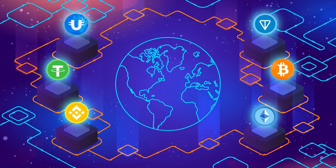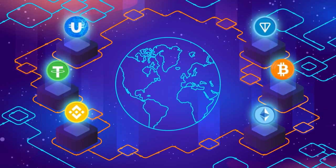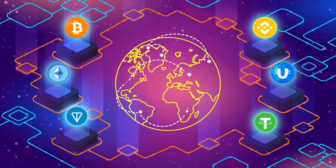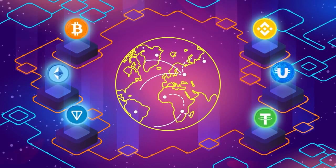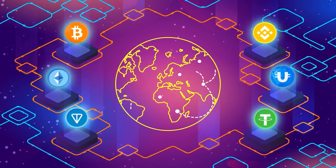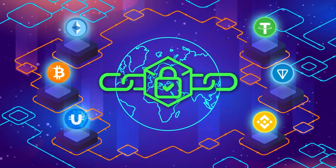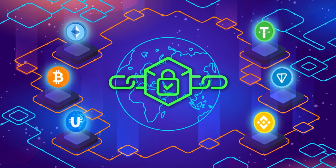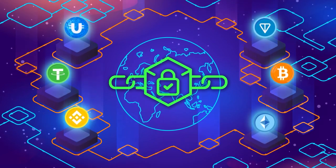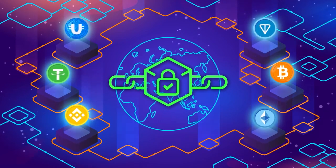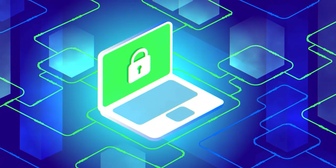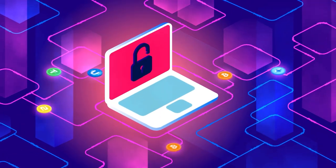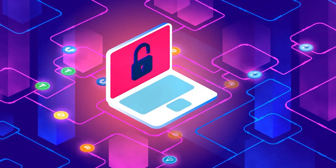The principle of decentralization that underlies cryptocurrencies, as well as the absence of intermediaries in the form of banks and other financial institutions, make cryptocurrencies the safest and most anonymous way to transfer money today. However, the risk of losing funds still remains the flip side of this freedom.